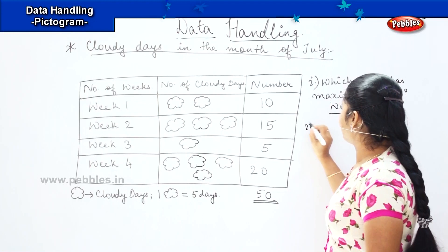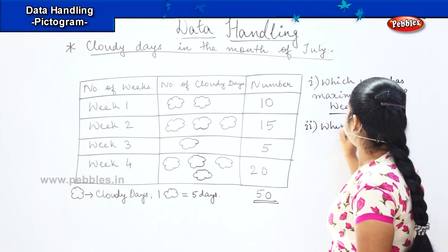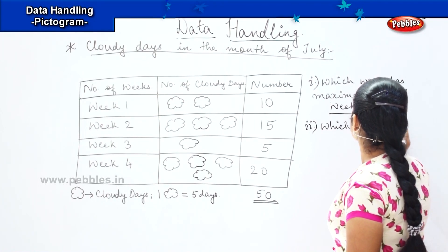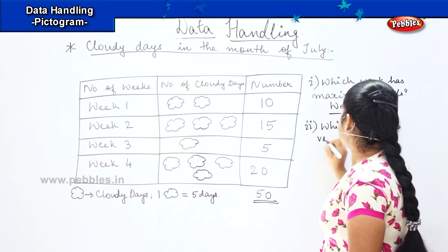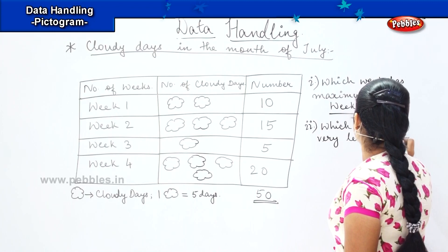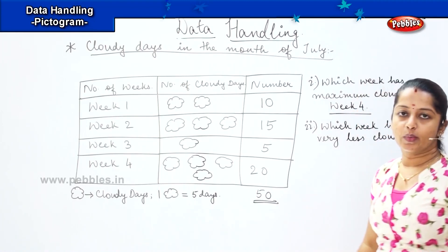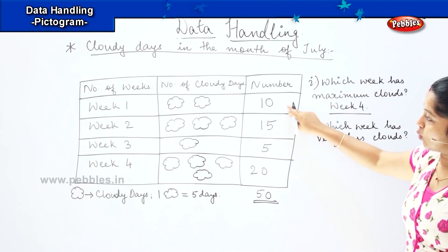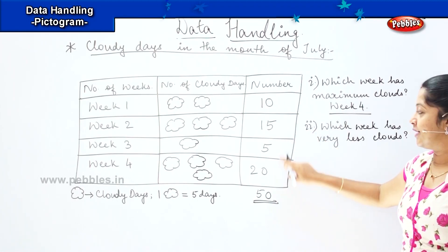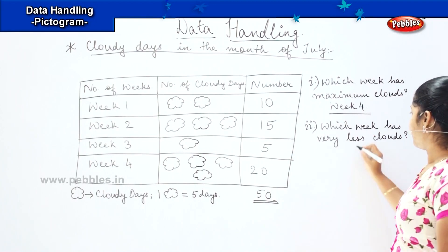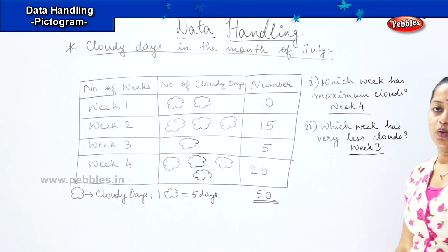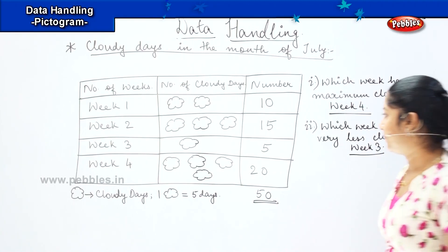My second question is: which week has very less clouds? Can you see and tell me — is it week one, week two, week three or week four? Good, it is week three. So week three is having the least number of clouds.